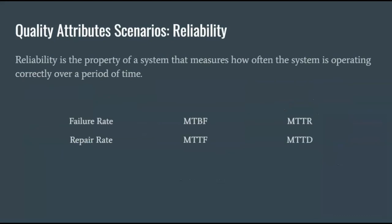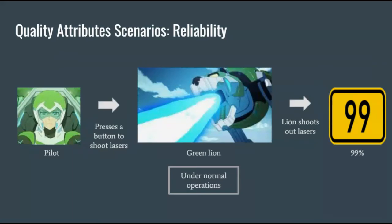Reliability is the property of a system that measures how often the system operates correctly over a period of time. There are many different ways to measure reliability — failure rate, repair rate, MTBF, MTTF, and so on. For example, when a pilot presses a button to shoot lasers from the Green Lion, under normal operations, the lion should shoot lasers 99% of the time.